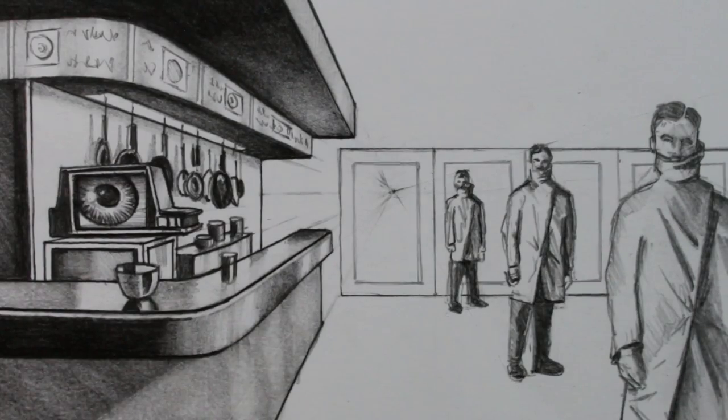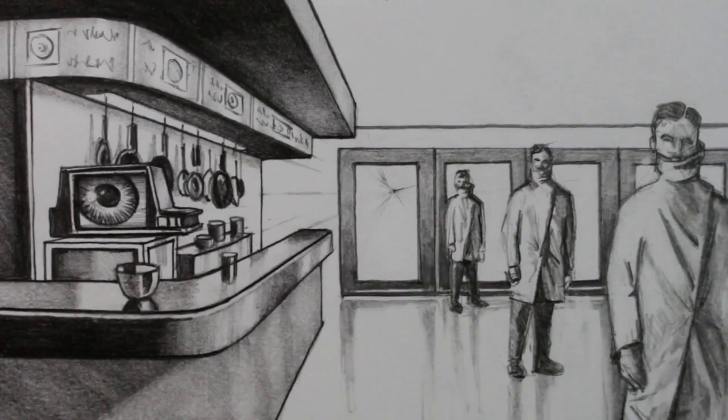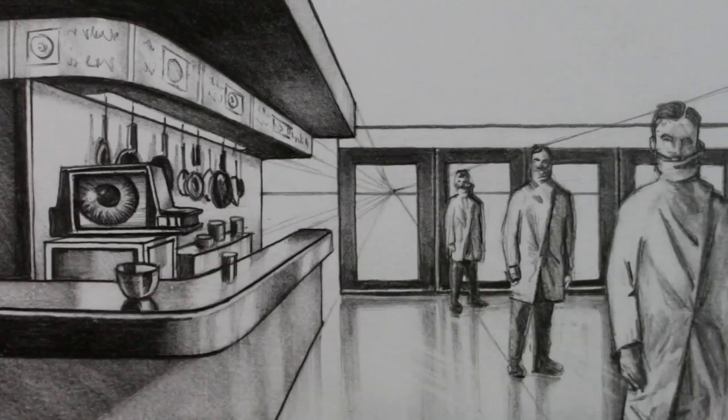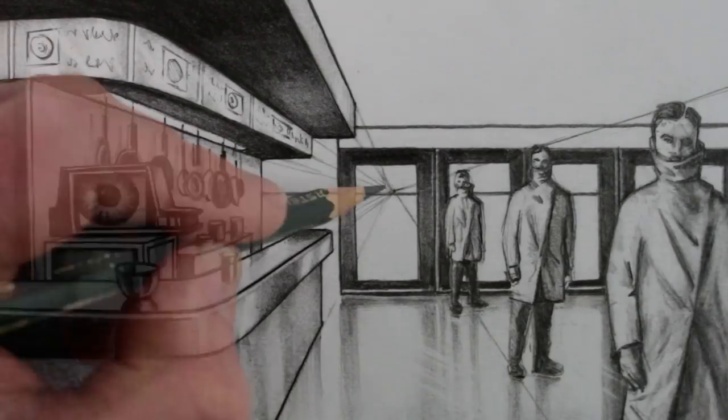To finish this drawing just add more tone. Darken the panels at the back and give the floor a soft tone to indicate a shiny sort of reflective surface.